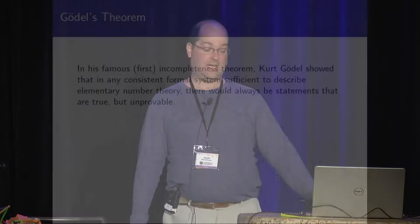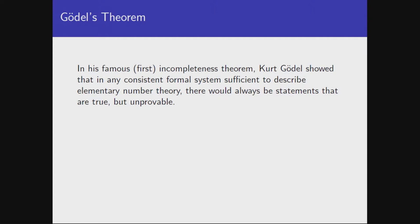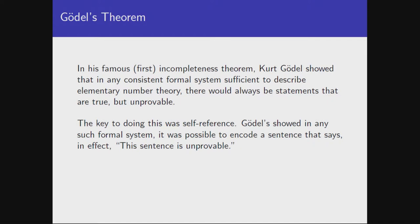So these are instances of bad self-reference. At this point you might just say 'new rule: no self-reference.' But you don't want to do that either, because there are also good instances of self-reference — instances where self-reference seems perfectly fine and uncontroversial. If I say 'this sentence is five words long,' that seems perfectly coherent. Probably the most famous instance of good self-reference is Gödel's theorem. In his first incompleteness theorem, he showed that any axiom system — any formal language adequate for expressing truths of elementary number theory — there would always be statements that are true but unprovable, assuming the theory is consistent.